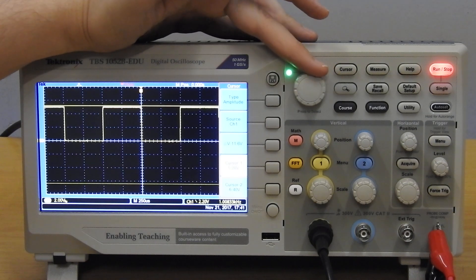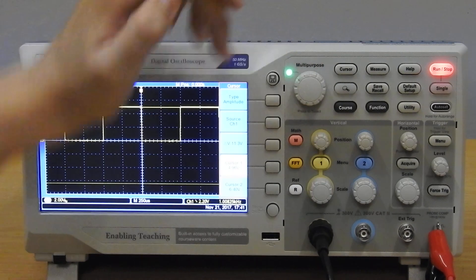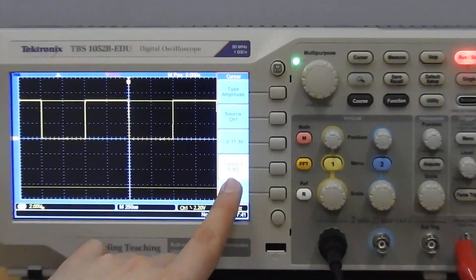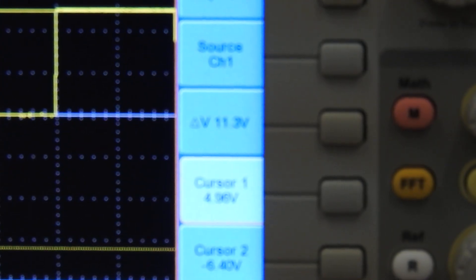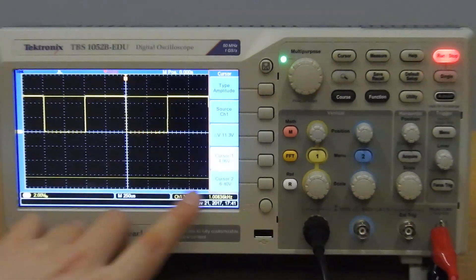If we set it on the top of this signal, we can see that cursor 1's position is at 4.96 volts, and cursor 2 is at minus 6.4. This is this dotted line down here currently.